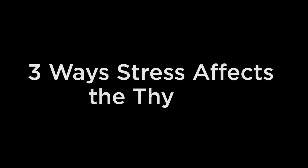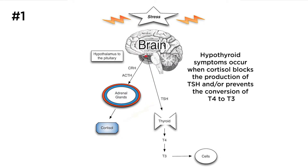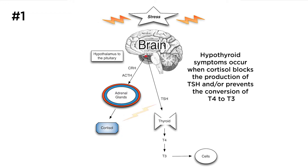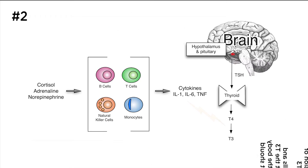There are three ways stress affects thyroid hormone function. Number one: under times of stress, the brain activates the adrenal glands to secrete cortisol. Cortisol will reduce the production of TSH and the production of T4 and T3. Cortisol will also block the conversion of T4 to T3, creating hypothyroid symptoms on a cellular level.